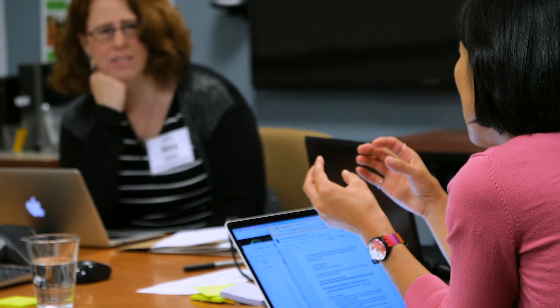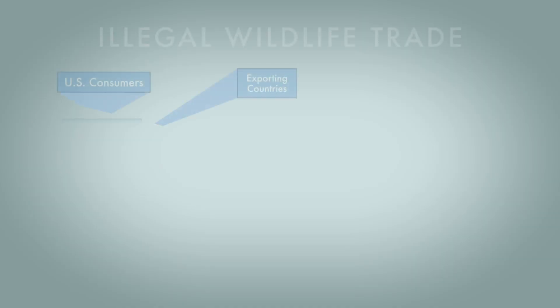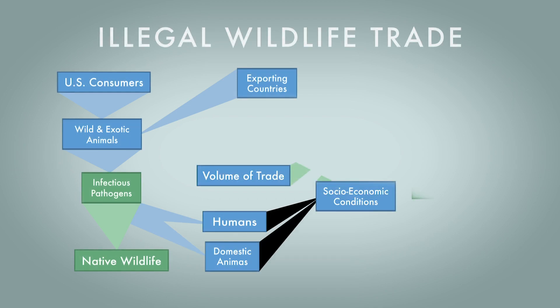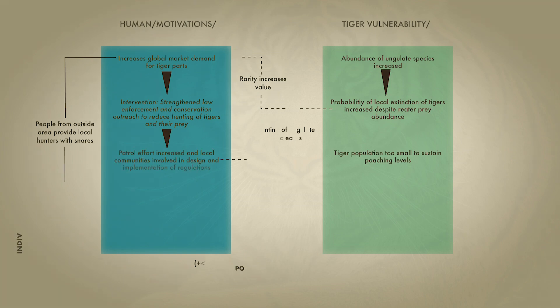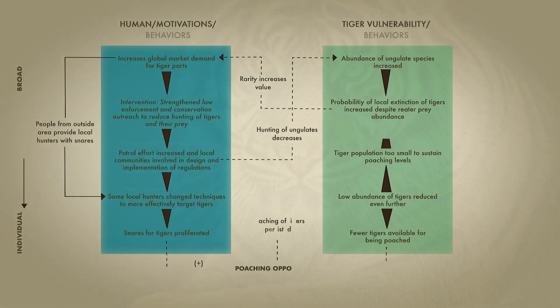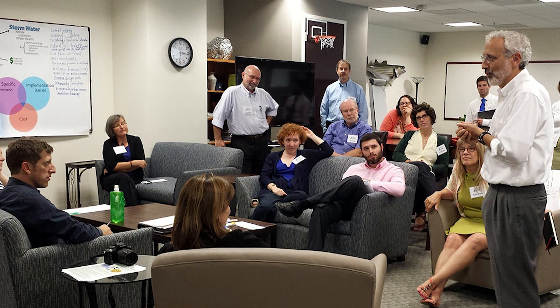Successful teams co-develop the research project from the very beginning. They start by exploring ideas and work on building trust, then develop a research framework. There are many tools available for developing shared conceptual models, which is the first step in co-development.